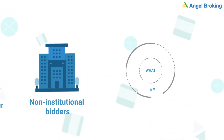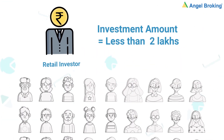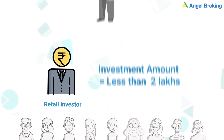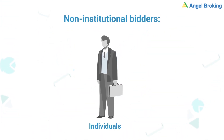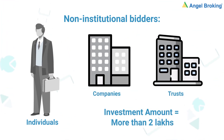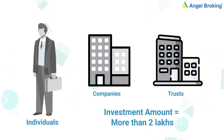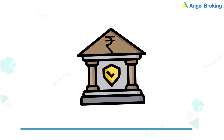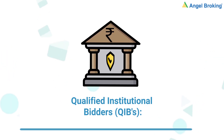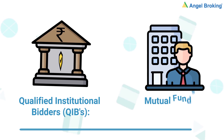This brings us to the who part of the equation. Retail investors - they individuals hote hain jo 2 lakh se kam ke shares kharidte hain. Non-institutional bidders are individuals, companies, cultural societies or trusts that place bids for more than 2 lakhs in the IPO. Institutional investors, also known as qualified institutional bidders, are financial institutions like banks and mutual funds.